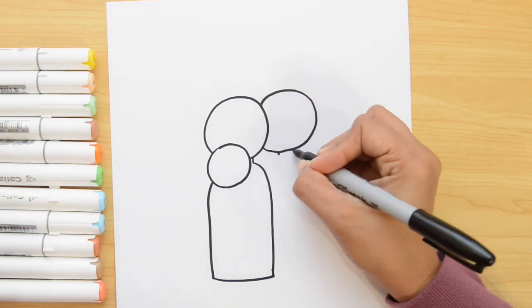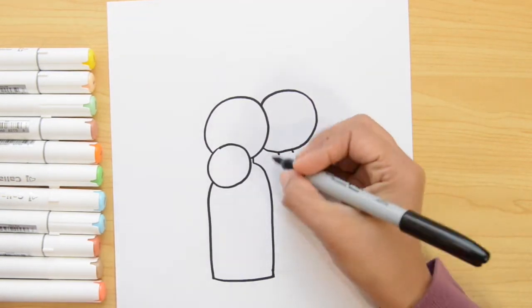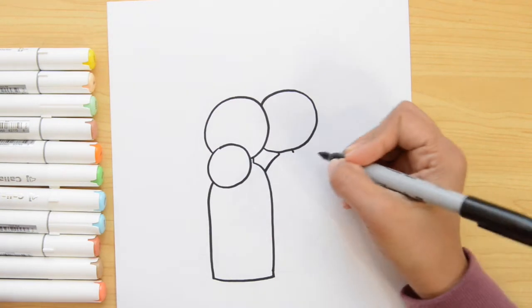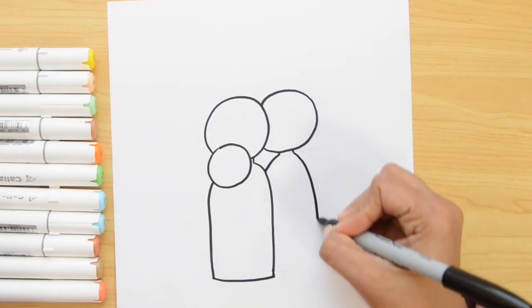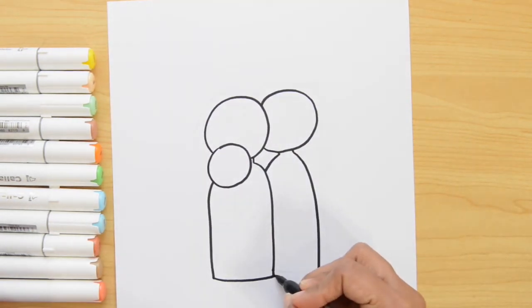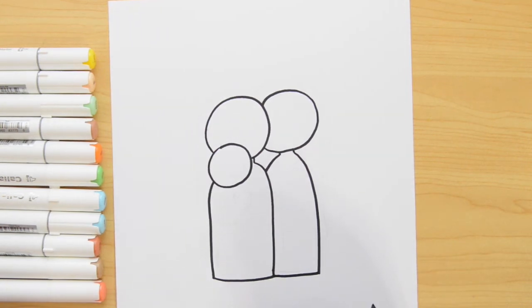Let's do the same thing for Joseph's body, so two little lines for the neck and now a curved line and another one that goes all the way down and we close them. Good!